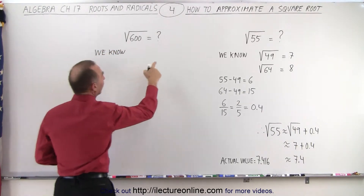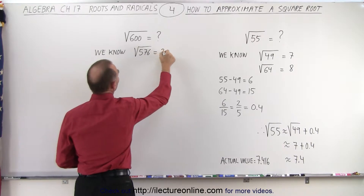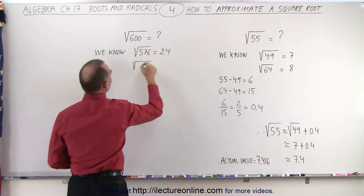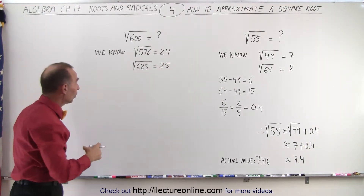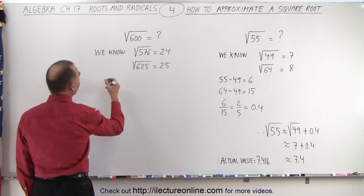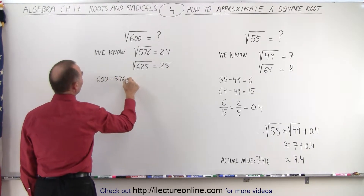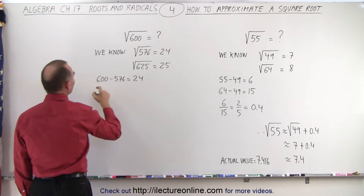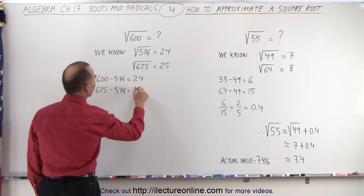We know that the square root of 576 is equal to 24 and that the square root of 625 is equal to 25. The square root of 600 should fall somewhere in between. So what we do is take the difference between 600 and 576, which is equal to 24, and we take the difference between 625 and 576, which is equal to 49.